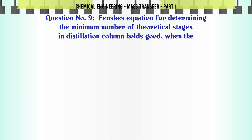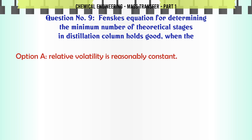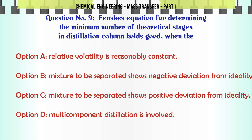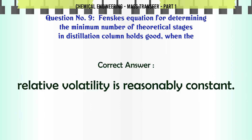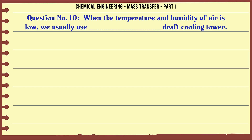Fenske's equation for determining the minimum number of theoretical stages in a distillation column holds good when the: A. Relative volatility is reasonably constant. B. Mixture to be separated shows negative deviation from ideality. C. Mixture to be separated shows positive deviation from ideality. D. Multi-component distillation is involved. The correct answer is Relative volatility is reasonably constant.